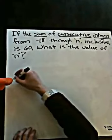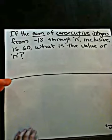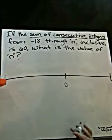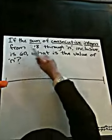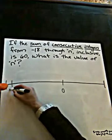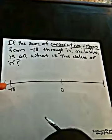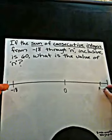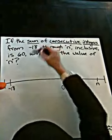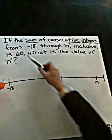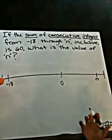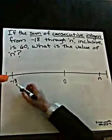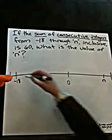First thing we want to do when we see problems like this is draw our number line, just like Professor Lucan did. We always want to put a zero in on the number line to give us a sense of where we're starting. The first thing we see is that we're going to begin at negative 18. And it asks us to add up all of the numbers between negative 18 and n.